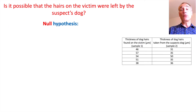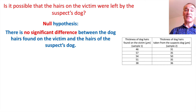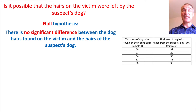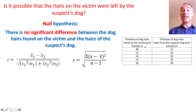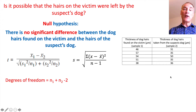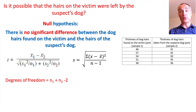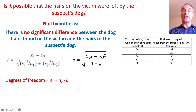Our null hypothesis is: there is no significant difference between the dog hairs found on the victim and the hairs of the suspect's dog. First we work out our t value using the t-test, calculating standard deviations for both samples. We then calculate degrees of freedom: both sample sizes added together minus two. With five plus five minus two, that gives us eight degrees of freedom.